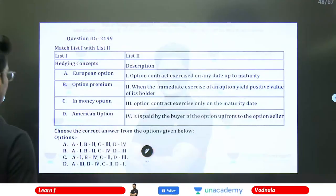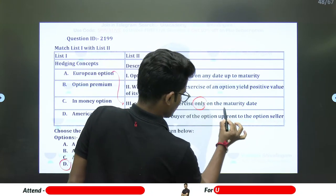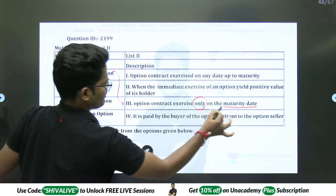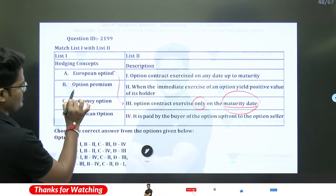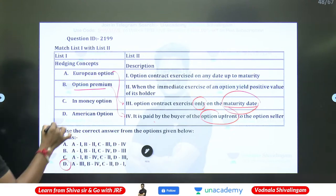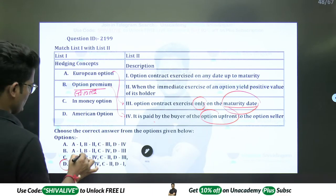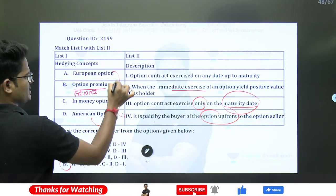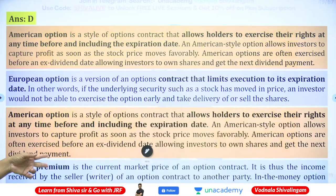Answer is D. A European option can only be exercised on the maturity date — only on the maturity date. Option premium is paid by the buyer upfront to exercise the option — it is an advance payment. An in-the-money option has immediate exercise value for a positive spot value. An American option can be exercised on any date up to and including the maturity date.